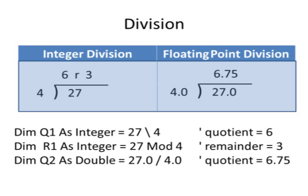Here is an example of how Visual Basic treats division with integers and floating point. For example, if I say dim Q1, I'm using Q for my quotient, dim Q1 as integer equals 27 divided by 4, the quotient is 6, and notice the backslash there.